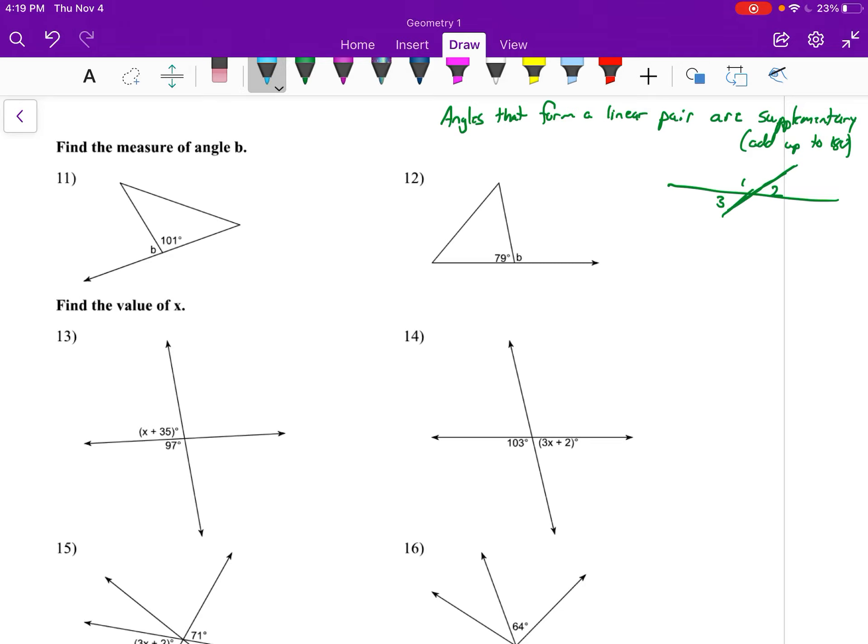The other concept is vertical angles are congruent, which means their measures will equal each other. Remember, if two lines intersect, angle one and angle two would form vertical angles, and so those angles' measures would be equal.